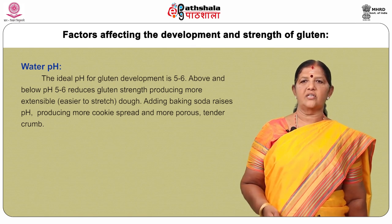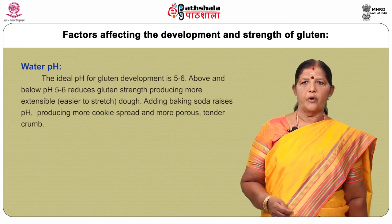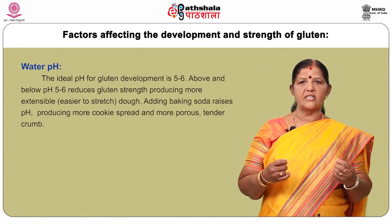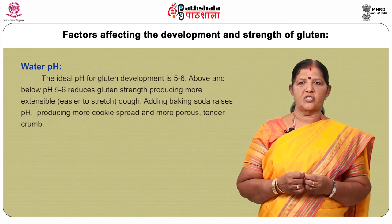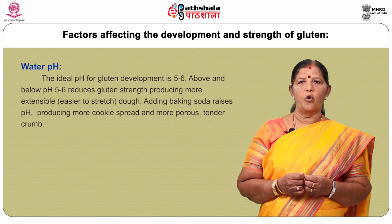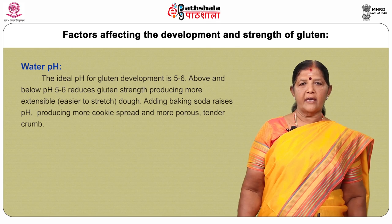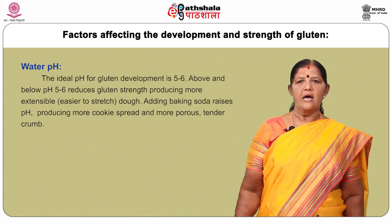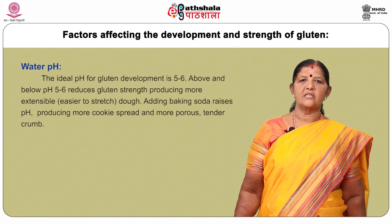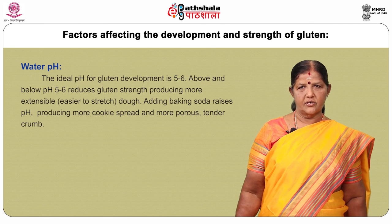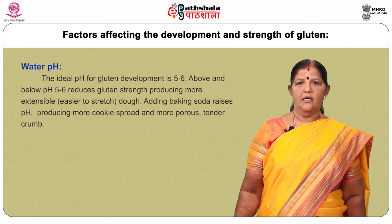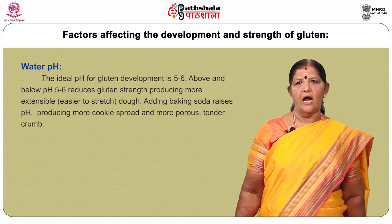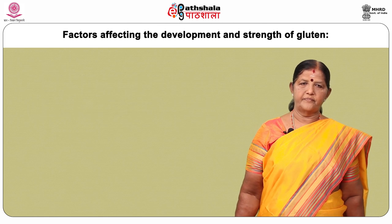Above and below pH 5–6 reduces gluten strength, producing more extensible, easier-to-stretch doughs. Adding baking soda raises the pH, producing more cookie spread and a more porous, tender crumb.